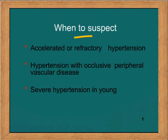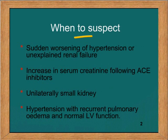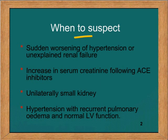When do you suspect renal artery stenosis? When a patient has refractory or accelerated hypertension, hypertension with occlusive peripheral vascular disease, or severe hypertension in the young. Also when you suddenly see a patient with hypertension developing renal failure, when there is an increase in serum creatinine following ACE inhibitors, when you find a unilaterally small kidney, or flash pulmonary edema where LV function is normal.